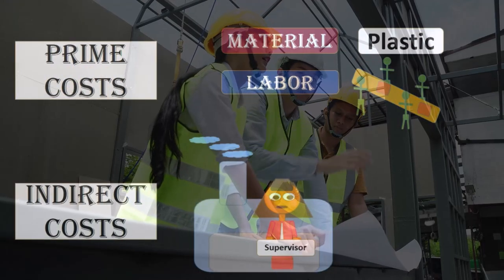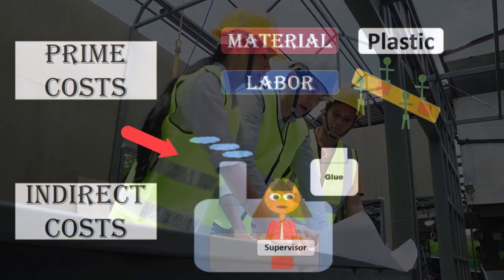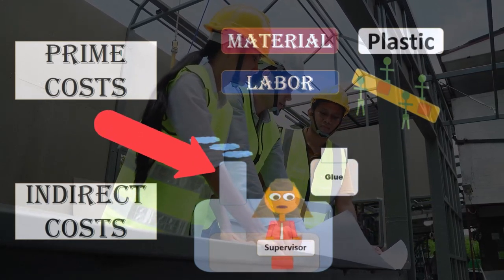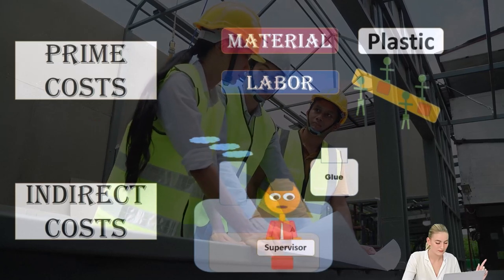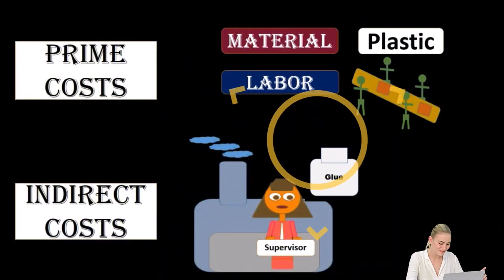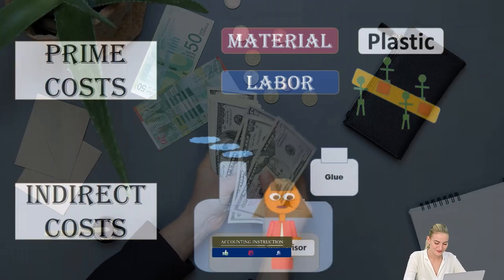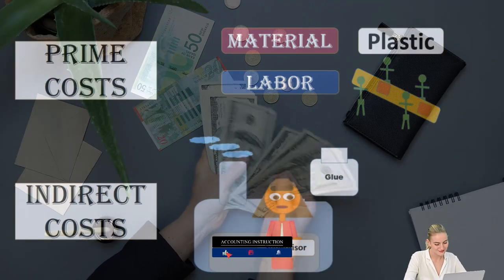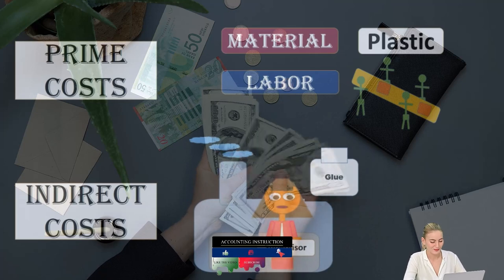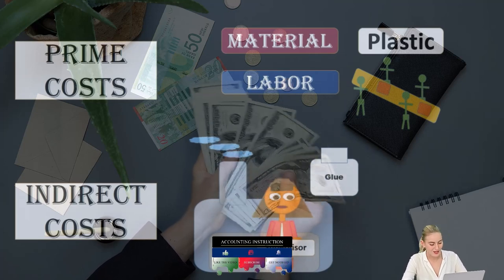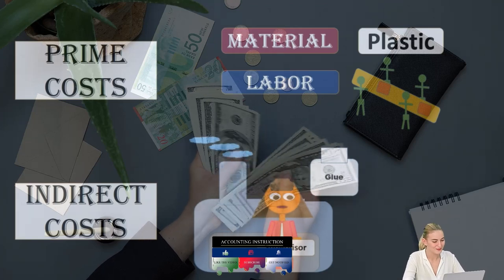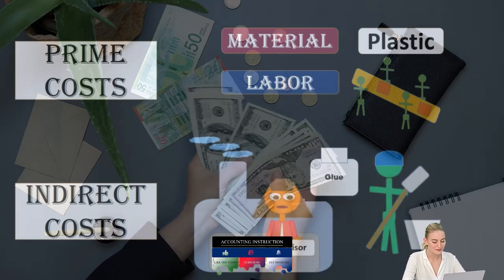Therefore, we're going to have to put these types of items — things like glue, small things — into an account called overhead, and then apply them out. So we're not putting them directly to the inventory job or process cost system. We're going to put them in by first putting them to an overhead account, then finding some way to apply that overhead to the particular jobs and processes.